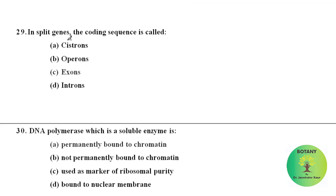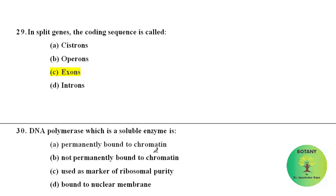In split genes, the coding sequences are called exons and the non-coding sequences are called introns. DNA polymerase, which is a soluble enzyme, is permanently bound to chromatin.